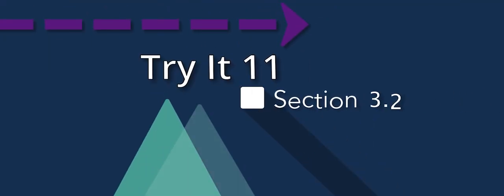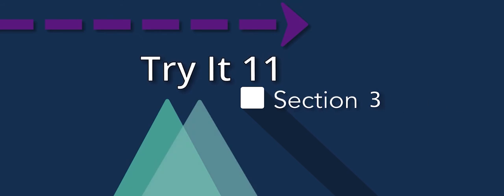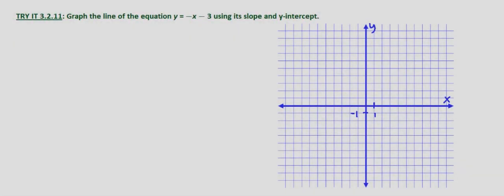So now we're looking at how to graph the line of an equation using its slope and y-intercept. Our first step is to put it into slope-intercept form. If you remember, that is y equals mx plus b.